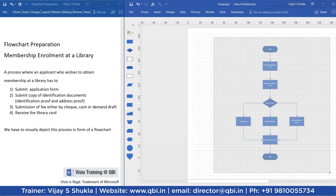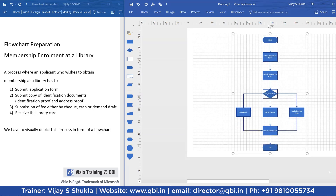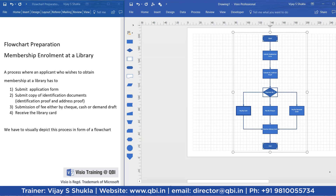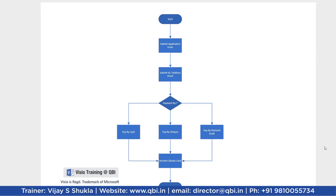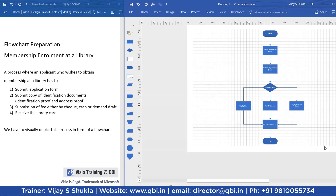I will just select the entire flowchart and try to depict it in a single page. This is all about simple flowchart preparation through Visio. I will do F5 for the view, and this is the flowchart which we have prepared in Visio. Flowchart preparation is as easy as this. The shapes used here: this is the notation for start, this is the notation for the process step, this is the notation for decision, these are all process flows, and this is the notation for end. This is what I intended to cover in this exercise. Thank you.